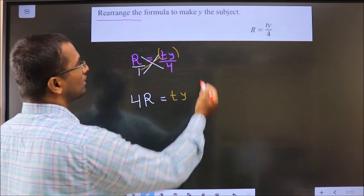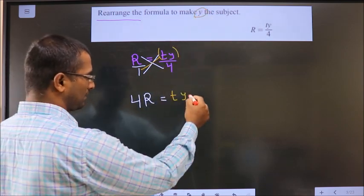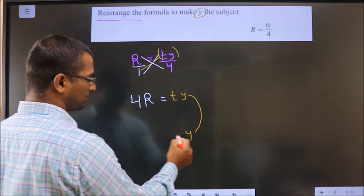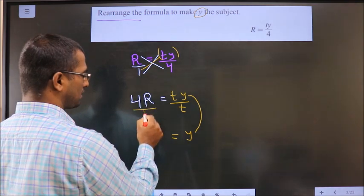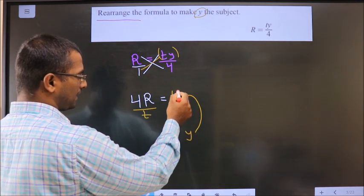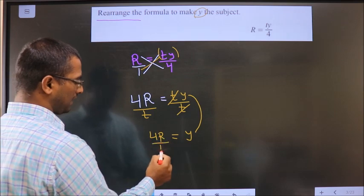Now I need to make y the subject. To get y from this, I divide by t on both sides so that the t cancels out. So y = 4r/t.